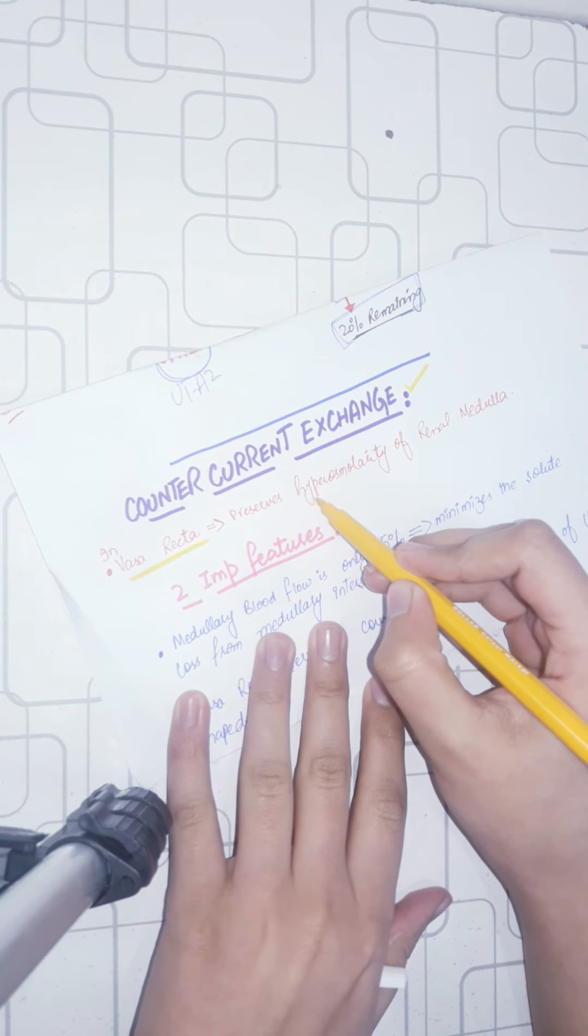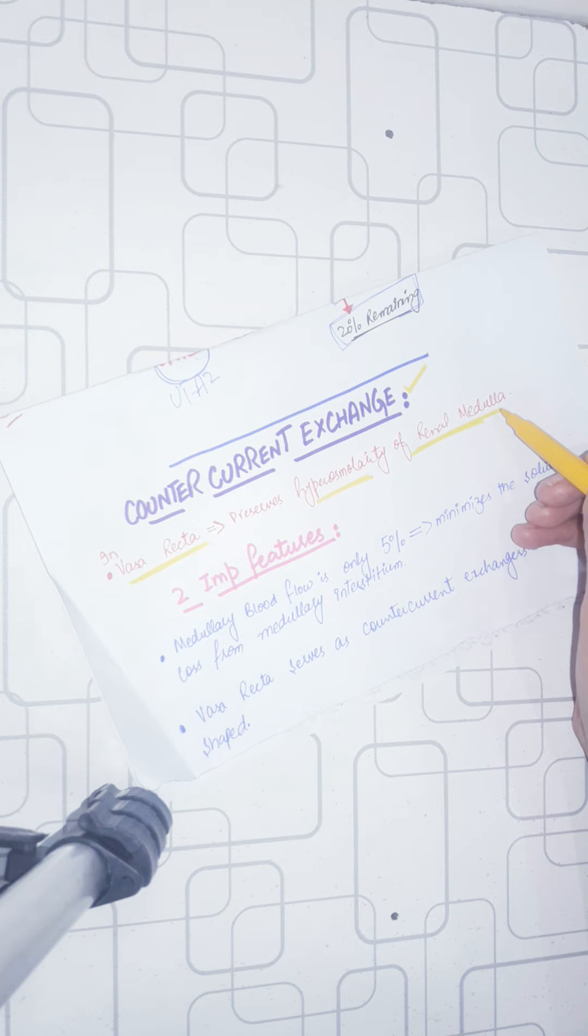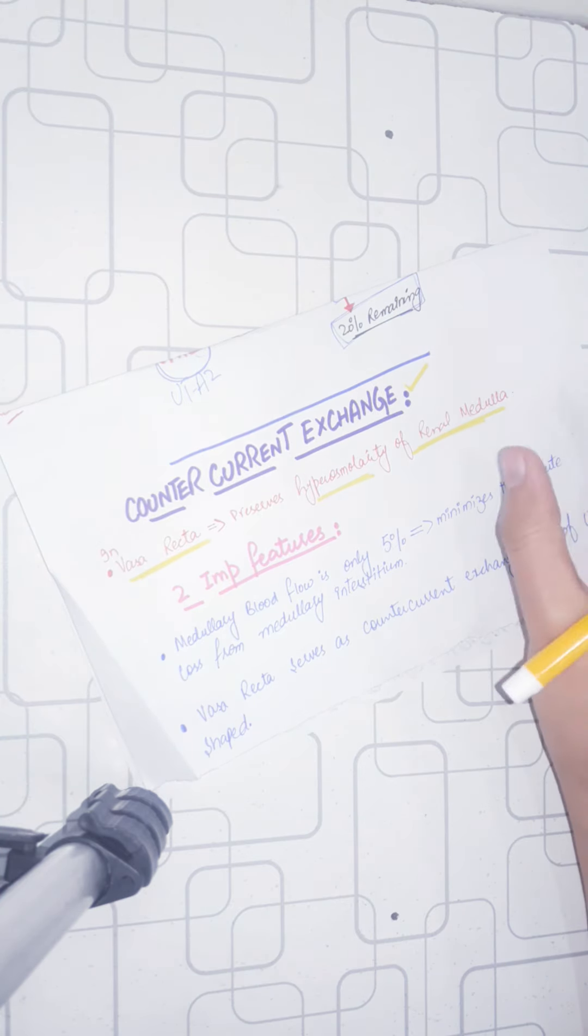This process preserves hyperosmolarity of the inner medulla. What do we do? We do counter current exchange, or counter current mechanism, which we have in vasa recta. And what do we do? It preserves hyperosmolarity of the renal medulla, which we can attain through the counter current mechanism.